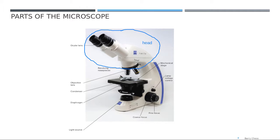In the head, you see this part called the eyepiece. In the eyepiece you see the ocular lens. The ocular lens has the power to enlarge objects. The power of the ocular lens is usually 10 times.